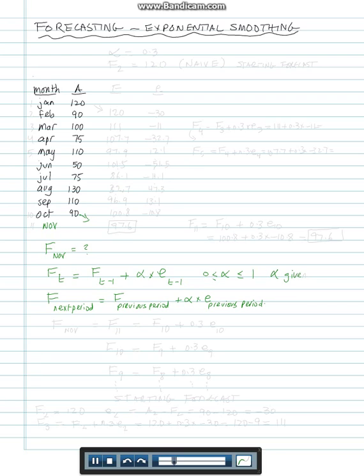By the way, alpha will be given to you - people spend a lot of time calculating it, just like the weights in weighted moving average, and you're not expected to calculate it in this class. We're assuming alpha is 0.3. If we need F November, that's F11, so F11 equals F10 plus 0.3 times the error of period 10.